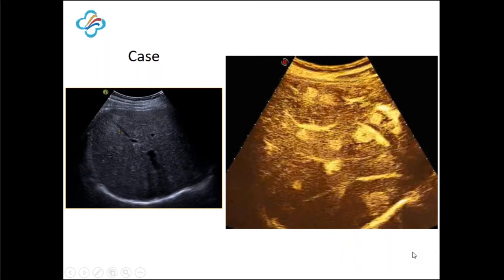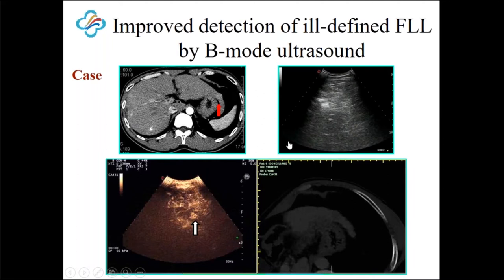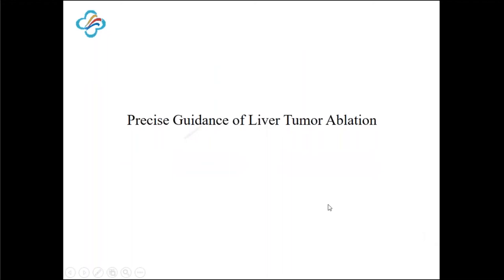In most cases, we have to use B-mode ultrasound to locate the lesion. Then after injection of the contrast agent, we can see the micro-bubbles infused into the lesion. But sometimes, if the lesion is inconspicuous on B-mode ultrasound, we can just miss the target, because the hyper-enhancement in the arterial phase lasts only a few seconds. For this case, it's very hard to locate the lesion, but then we can see the hyper-enhancement.